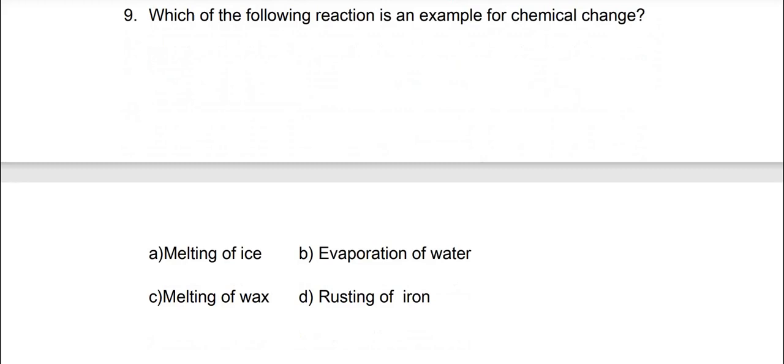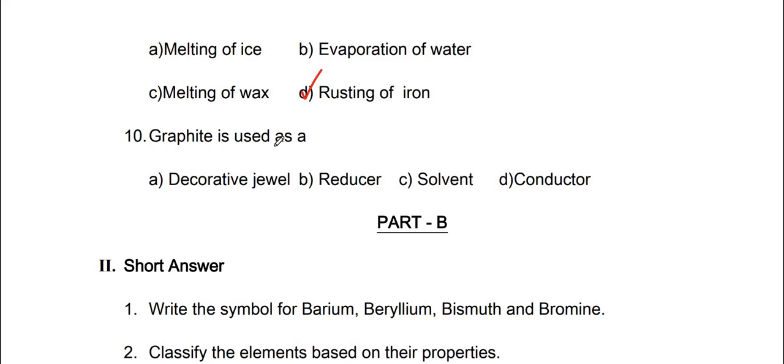Ninth one, which of the following reaction is an example for chemical change. Chemical change na rusting of iron da. Next, tenth one, graphite is used as a conductor. D.